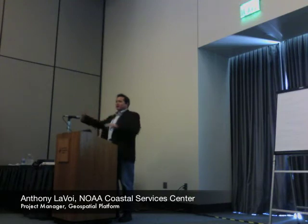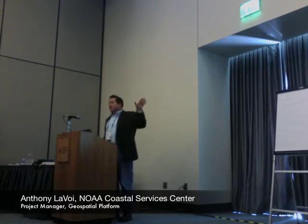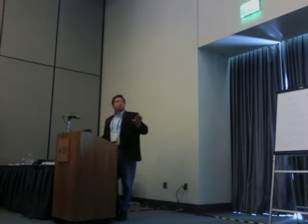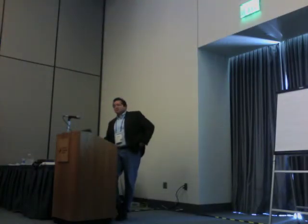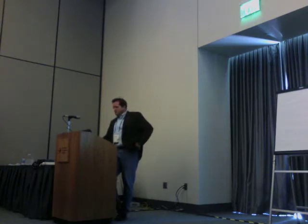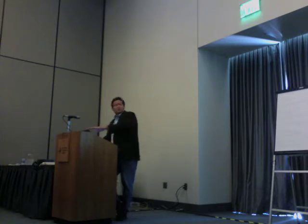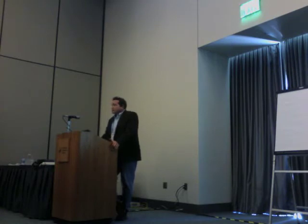We're back to the roadmap. That level of detail is what, if we had time, we could have gotten into for each of the pillars. Chapter 5 of the document is the business model — the notion of a business model. There are four principal components: what's the offering, what's the institution, what's it going to require to manage a platform activity — the managing partner, the partner network, the business processes — and who's the customer for the platform and how will the notional platform engage with that customer base.